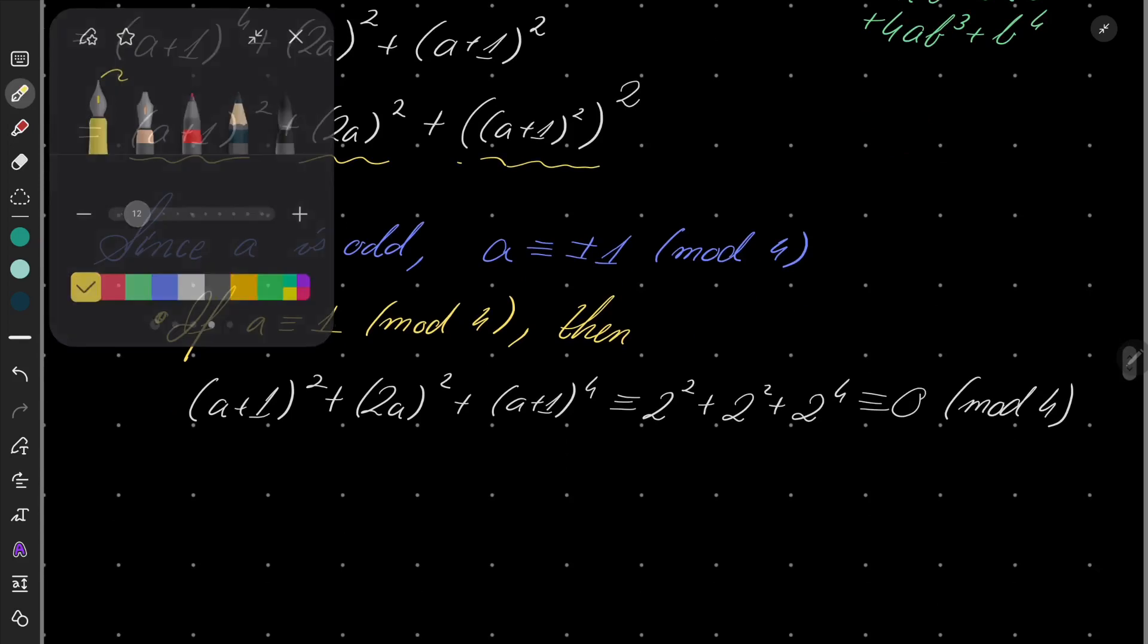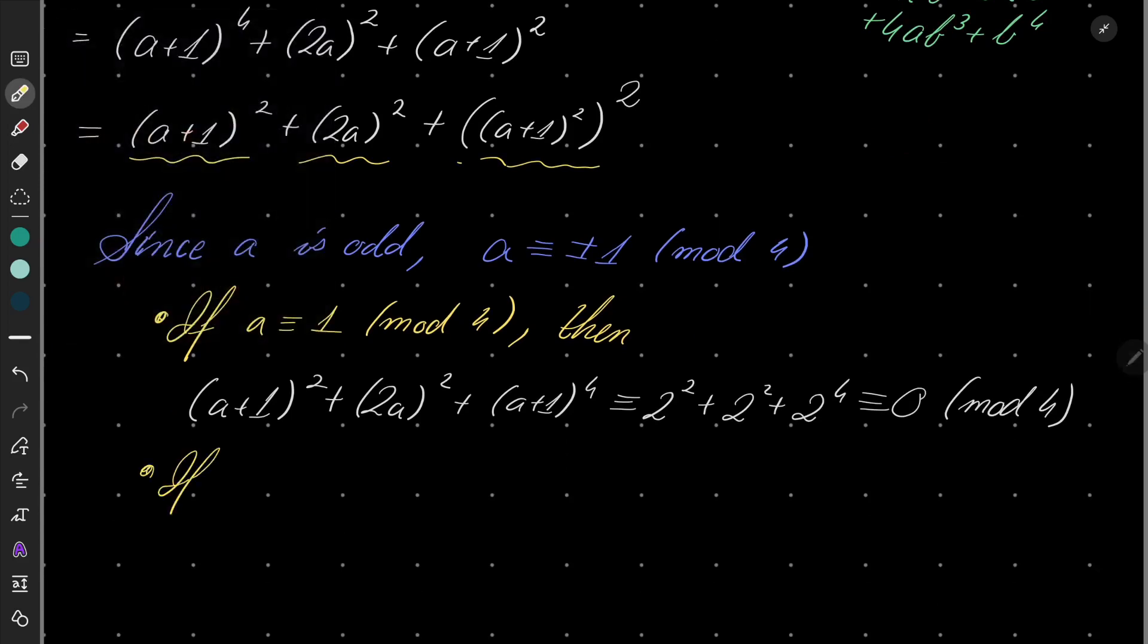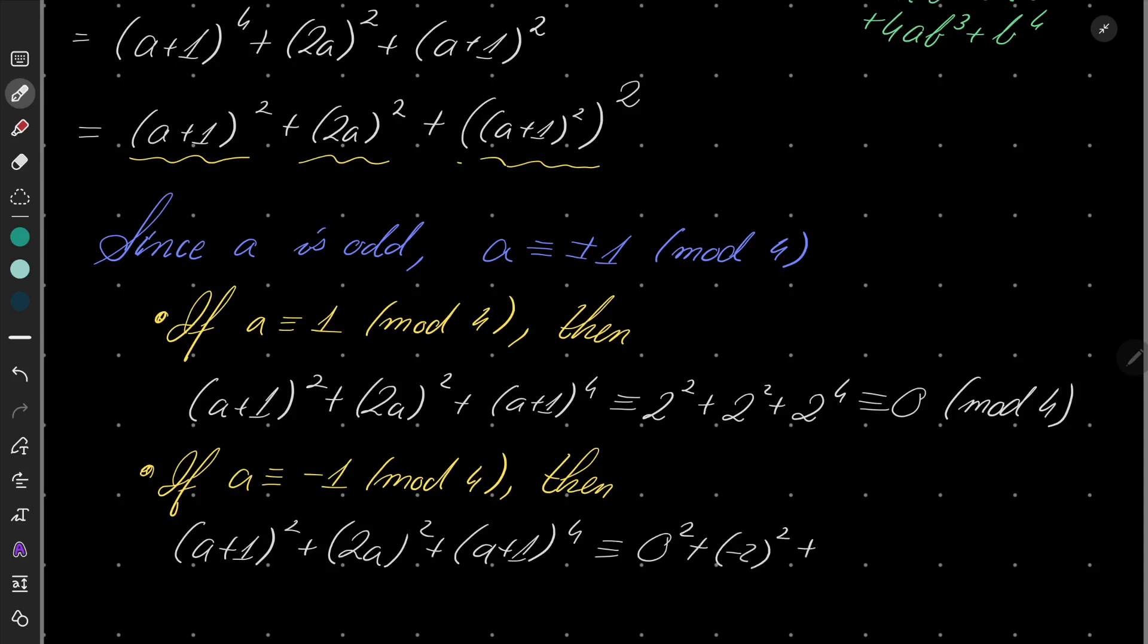And let's consider second case. If a is congruent to minus 1 modulo 4, then what happens? Well, nothing special. We have the following. Here we have these numbers congruent to 0^2. These numbers congruent to (-2)^2. And these numbers congruent to 0^4. And it's also congruent to 0 modulo 4, which means,